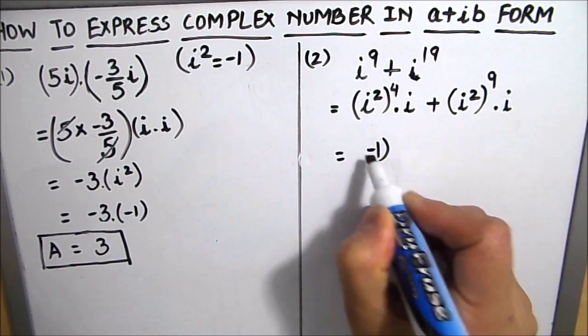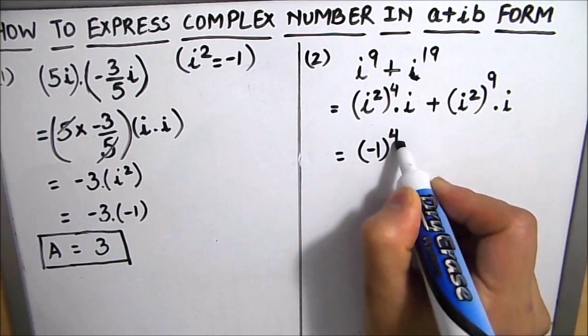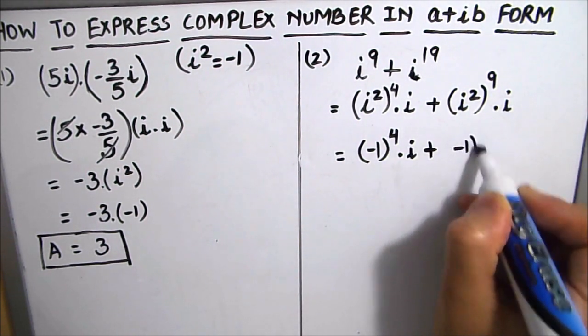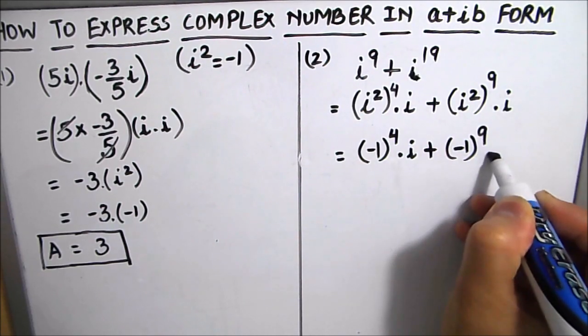So now here we are going to write minus 1 to the power 4 times iota plus minus 1 to the power 9 times iota.